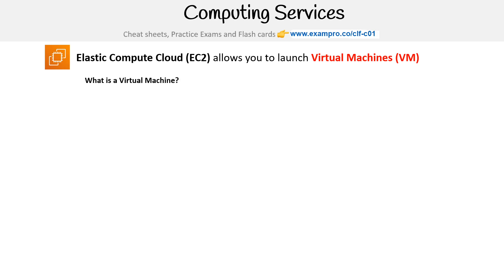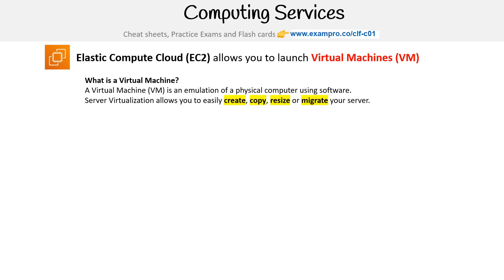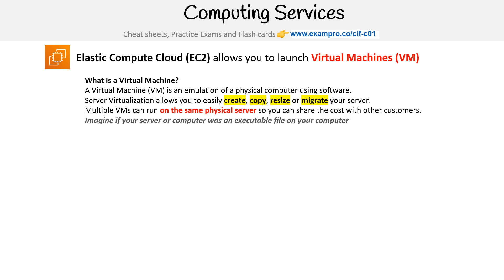So what is a virtual machine? A virtual machine or VM is an emulation of a physical computer using software. Server virtualization allows you to easily create, copy, resize, or migrate your server. Multiple VMs can run on the same physical server, so you can share the cost with other customers. Think of it as if your server or computer was an executable file on your computer.